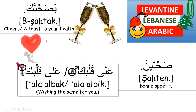If you're addressing a female you will say bisahhtak. And if someone says sahtain, it would be nice to reply ala al bak if you're addressing a male, or ala al bik if you're addressing a female. That means it's wishing the same for you — may the same pleasure or feeling be upon your heart, may you enjoy the same health and bliss.